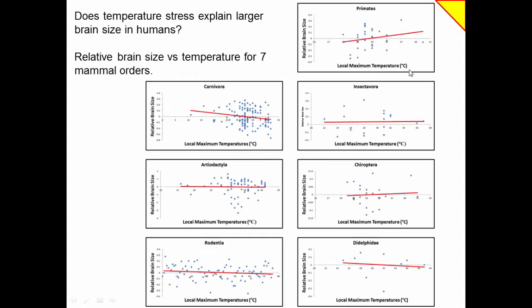Here's an example from a study that one of my students conducted: testing the hypothesis of whether temperature stress explains larger brain size in humans. Modern humans have very large brains, and we actually evolved them before we started doing really interesting things with them. The proposal is that evolving larger brains was a way to prevent heat stroke from living in Africa. The student got relative brain size — how big the brain is compared to what you'd expect based on body size — and plotted that against maximum temperatures for where species live today. Each data point represents a different species: carnivores, artiodactyls, rodents, primates, insectivores, bats, and didelphids.